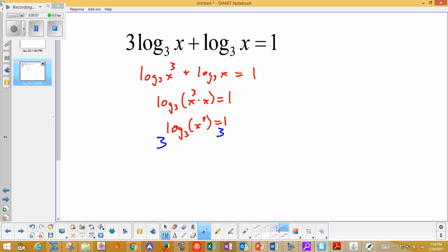here's the thing to understand is that 3 log base 3 of x to the 4th, these are inverses. So this leaves me with x to the 4th equals 3 to the 1st, which is 3,